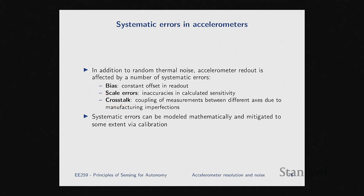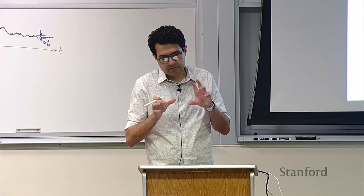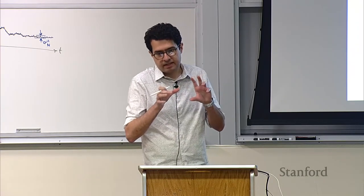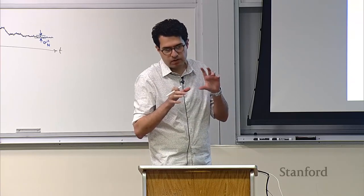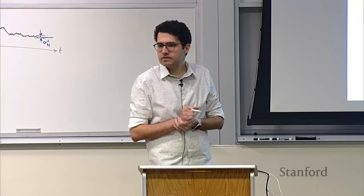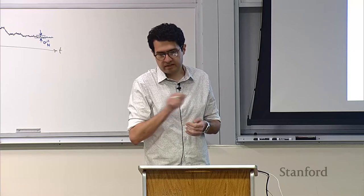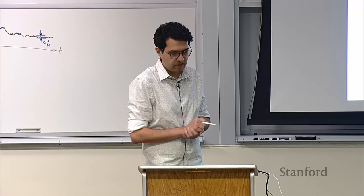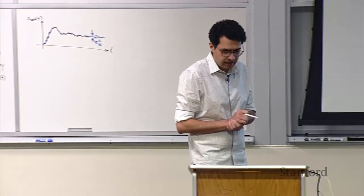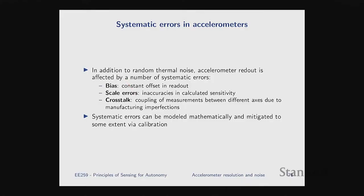Third is crosstalk, which is only a problem if you are sensing in more than one axis — the fact that you can have a little bit of coupling of the signal between different axes. For instance, as your proof mass moves in the x-axis, because of non-idealities in the fabrication process, your capacitive sensors for the y-axis pick up a little bit of signal. That's false signal coupled from acceleration in one axis into your sensor in the other axis. But importantly, these effects can to a large extent be mitigated through calibration.